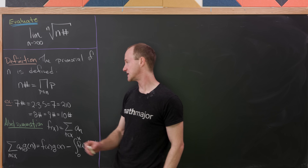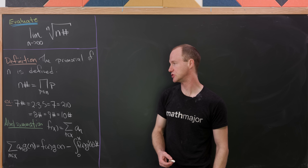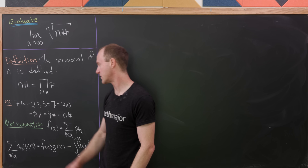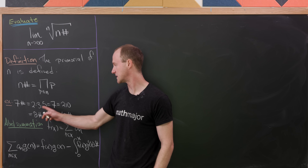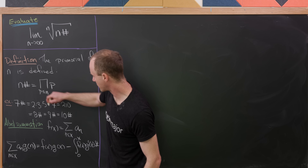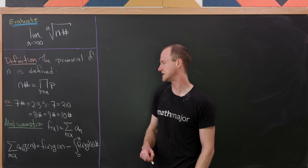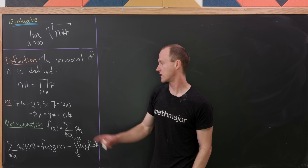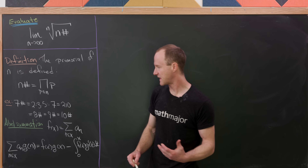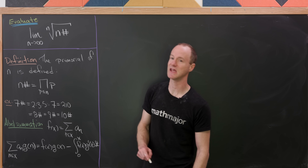The primorial of n is defined to be the product of all primes less than or equal to n. So as an example, 7# is equal to 2 times 3 times 5 times 7. Those are all of the primes less than or equal to 7. If you take that product, you get 210. But observe that that's the same thing as 8#, 9#, and 10#.